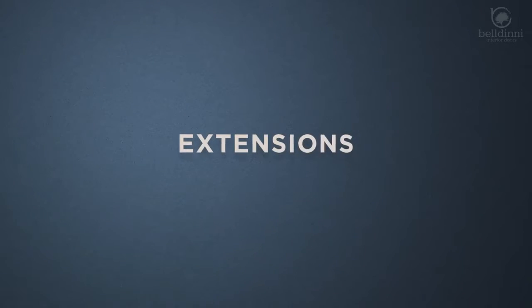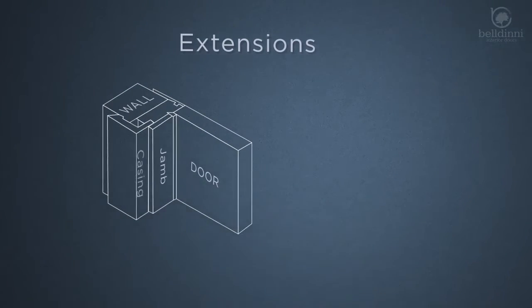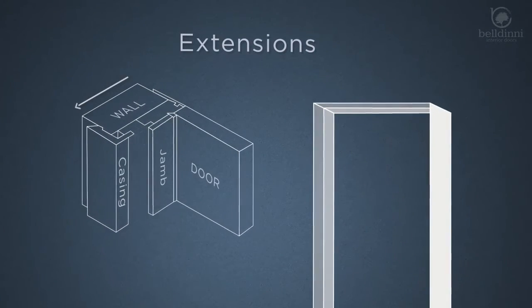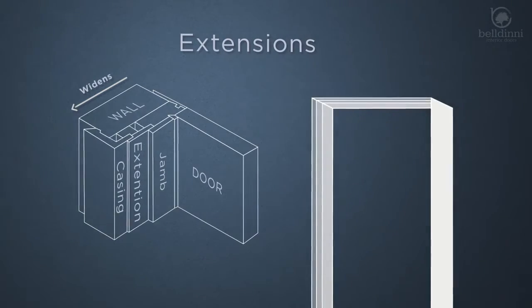Extensions. A jamb extension does precisely what the name suggests. It's a board that fills the depth of the wall space from the inside face of the doorframe to the face of the wall and thus widens the frame.